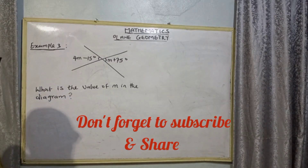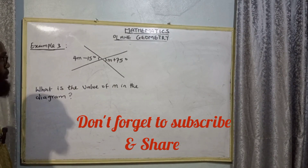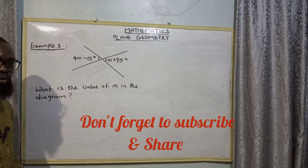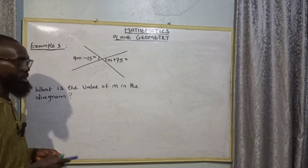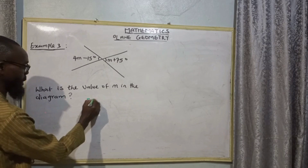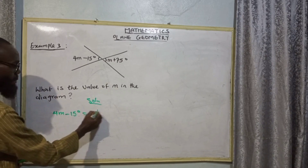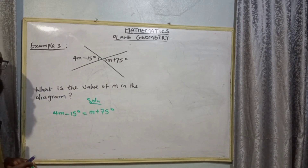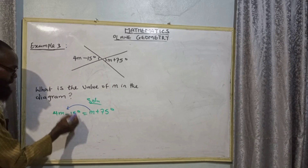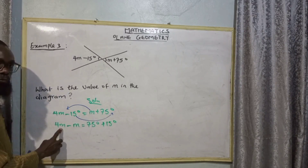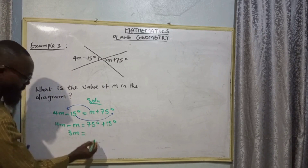Example 3: Given these intersecting lines, what is the value of M in the diagram? If you recall one of the theorems of intersecting lines — vertically opposite angles are equal. So the solution: 4M minus 50 degrees is equal to M plus 75 degrees. Let us collect like terms, with unknowns on the left-hand side and constants on the right.